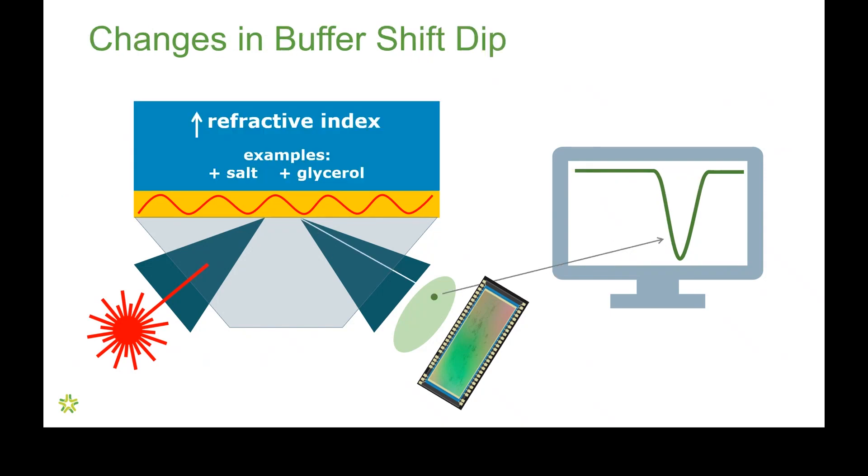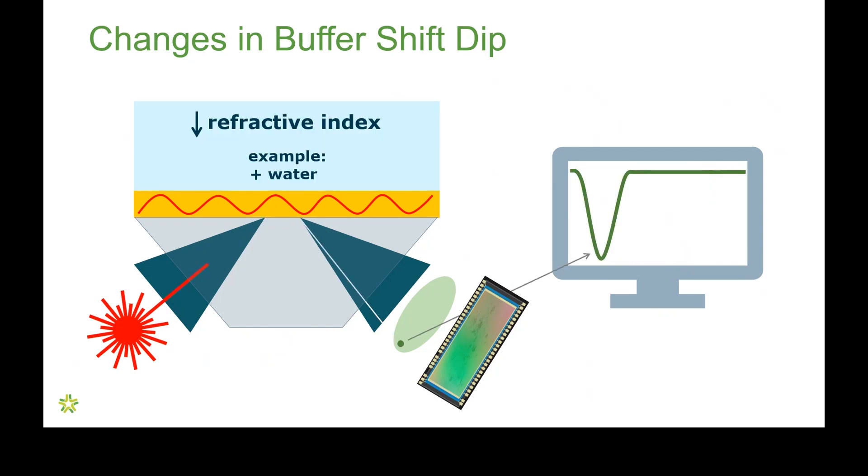So, that dip can shift to higher angles or to the right when we increase the refractive index of the buffer. Ways to do that are adding salt to the buffer or adding glycerol. Both of those increase the refractive index of the buffer. We can also decrease the refractive index by diluting buffer. Diluting it with water, for example, shifts the dips significantly to a lower angle or to the left on this screen.